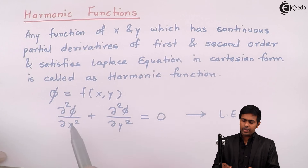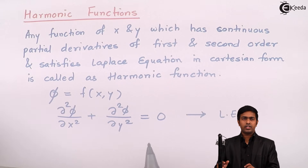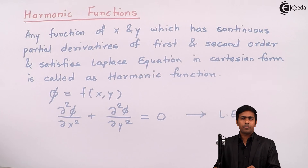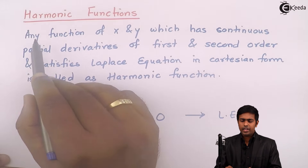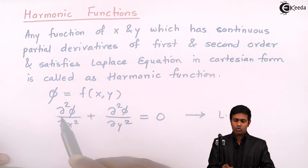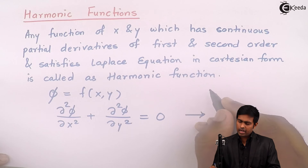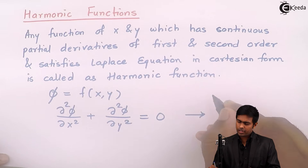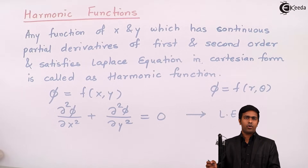We can use the same concept for polar coordinates as well. In polar form, for any function of r and theta — let's say phi is a function of r and theta — which has continuous partial derivatives of first and second order and which satisfies the Laplace equation in polar form, it is also harmonic.